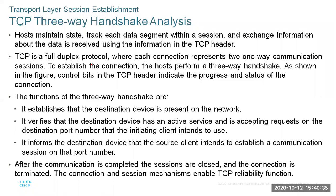Hosts maintain state and track each data segment within a session, exchanging information about data received using the TCP header. TCP is a full-duplex protocol where each connection represents two one-way communication sessions. To establish the connection, the host performs a three-way handshake. The functions of a three-way handshake include: establishing that the destination device is present on the network — TCP is connection-oriented, so it must establish the receiving device before transmission begins.